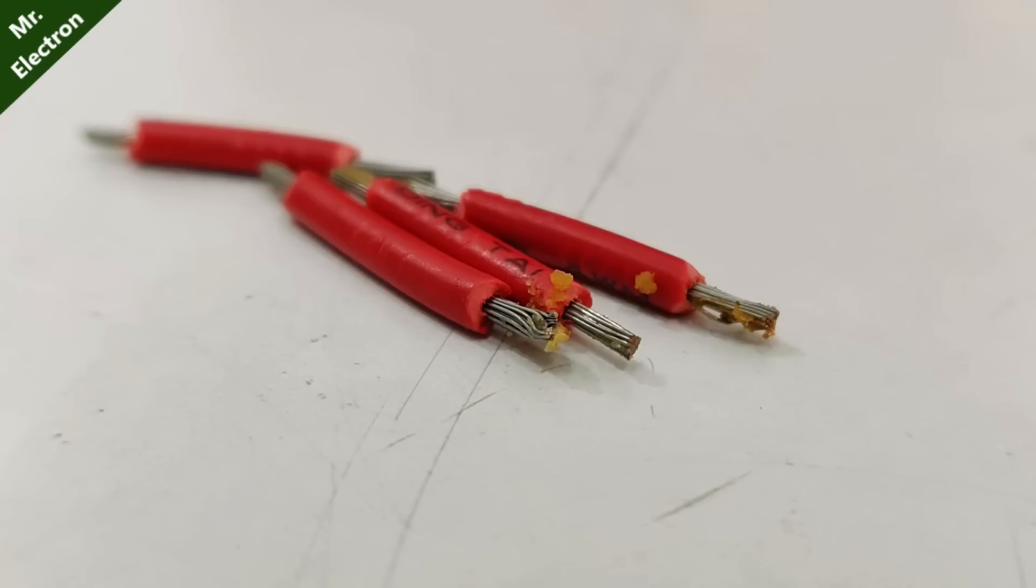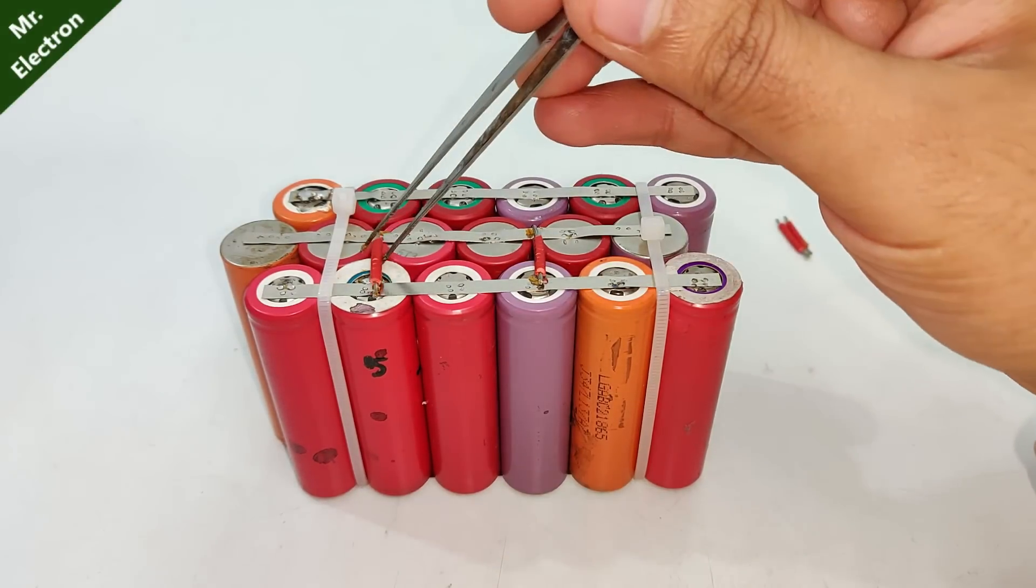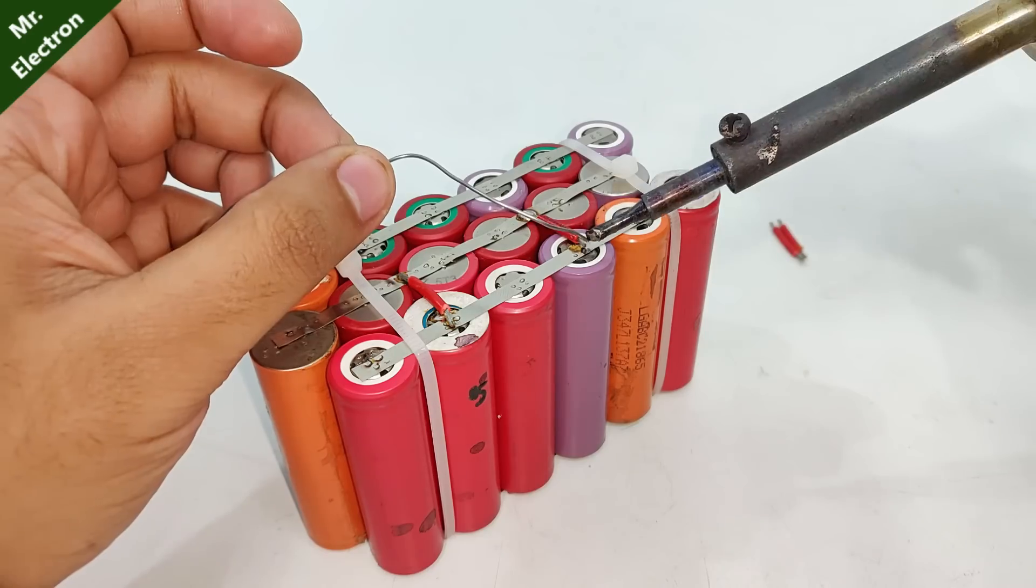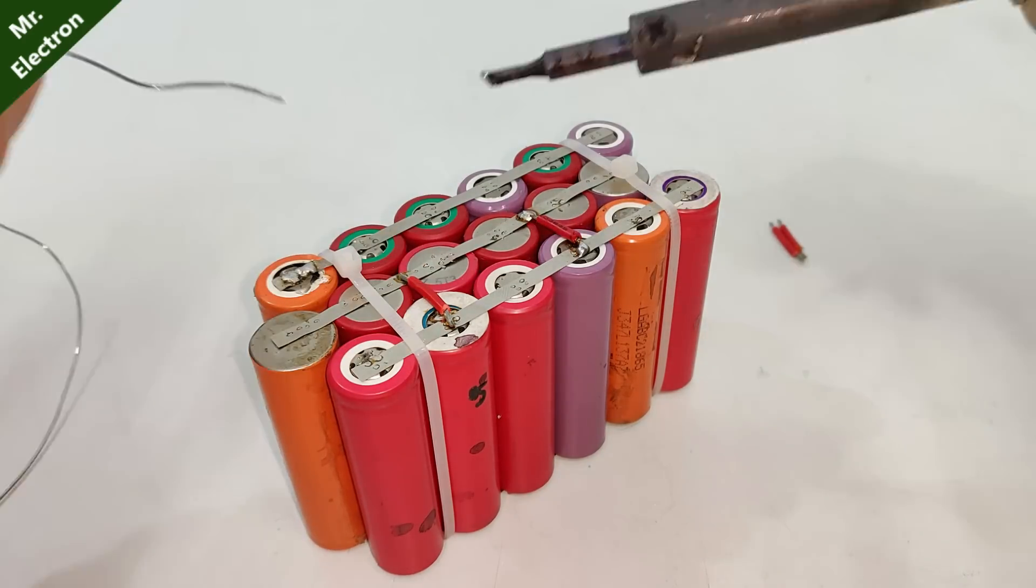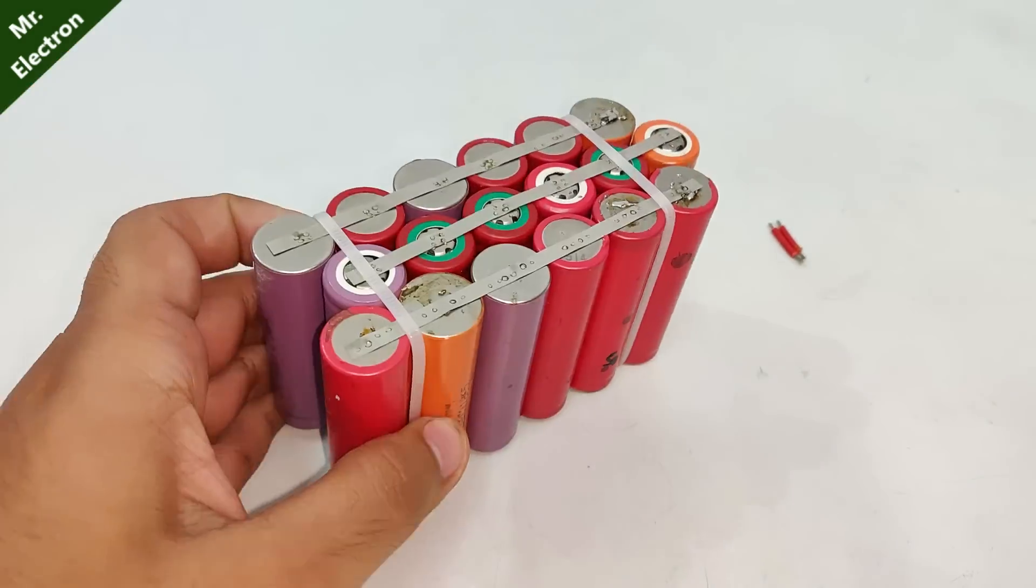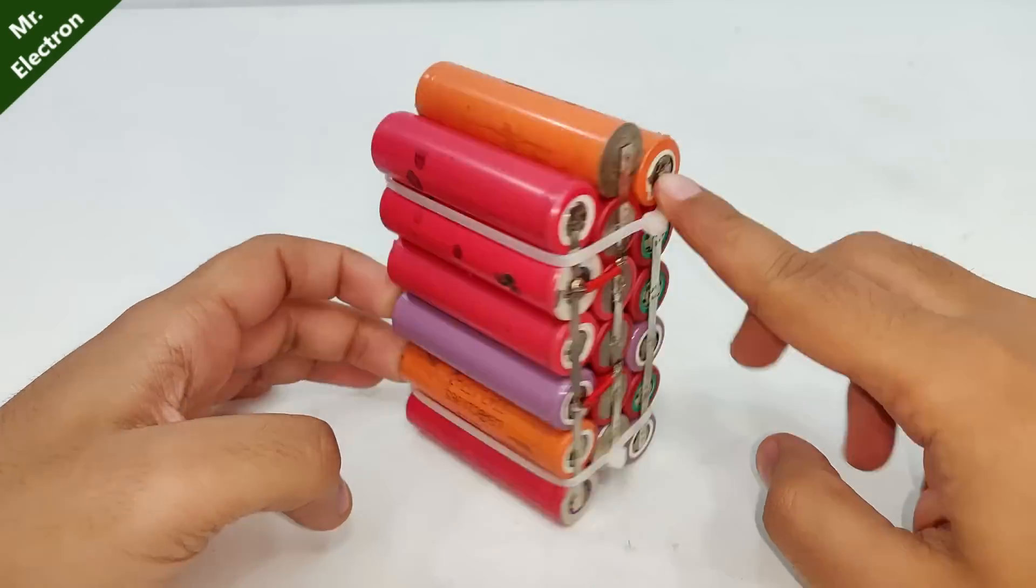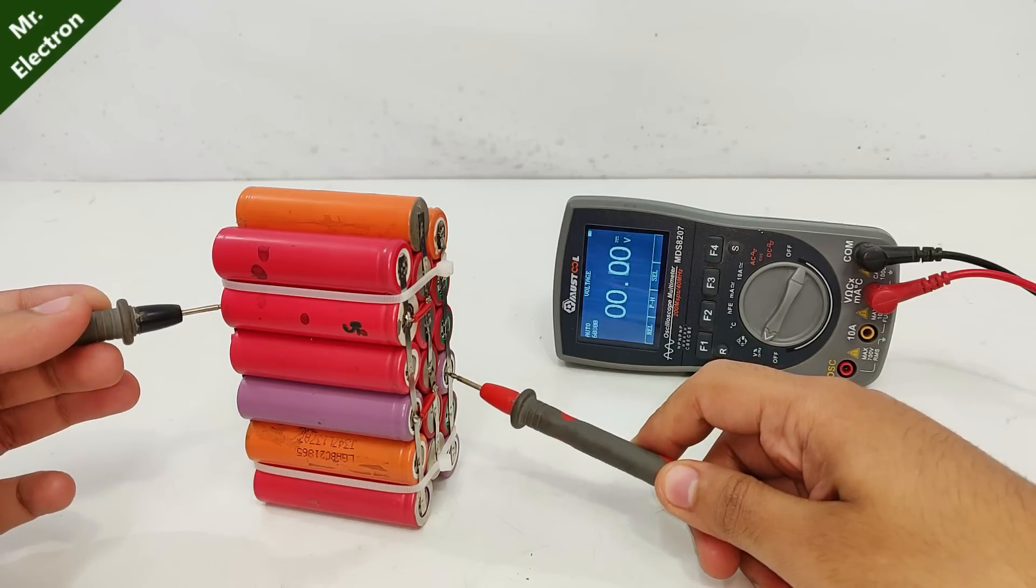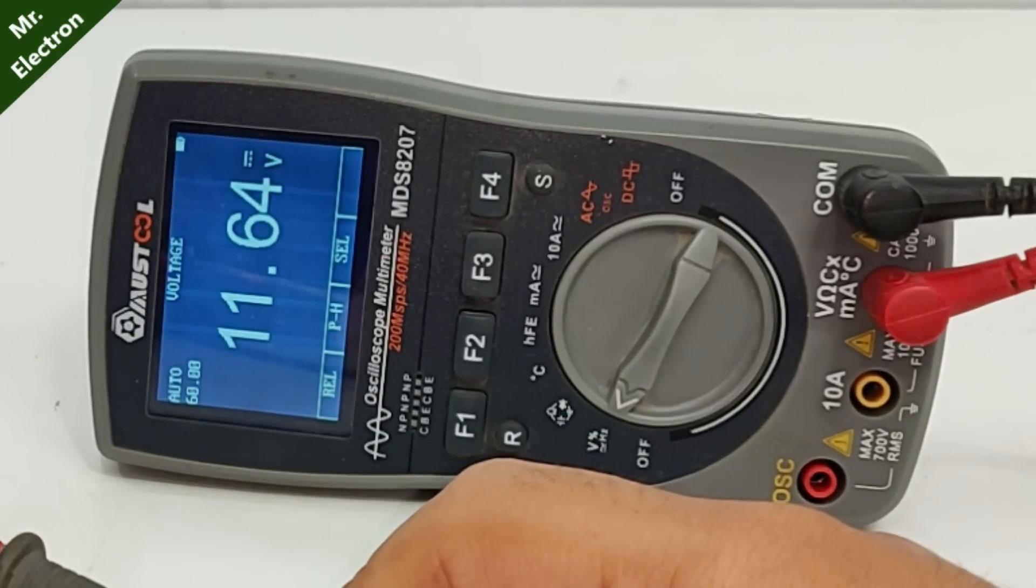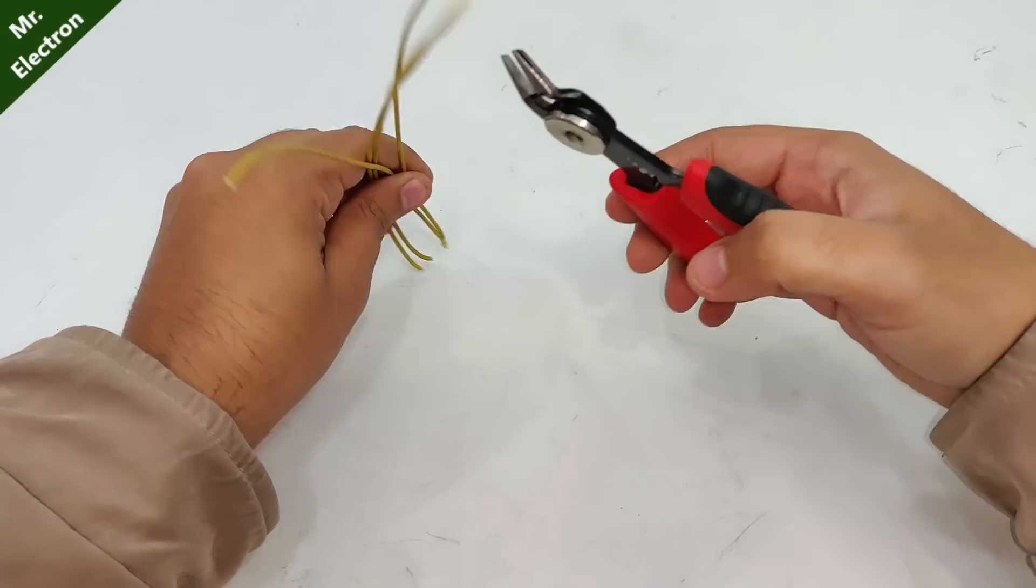Next take two wires and place them as shown, next solder them. Now here I'm using double wires to increase the current flow evenly. Now same thing on the other side. The overall positive and the overall negative, the voltage is 11.6 volts.